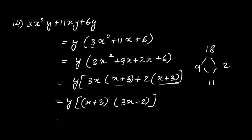Now write y and take (x+3) as common, writing the remaining terms (3x+2). Remove the square bracket to get the final answer: y(x+3)(3x+2).